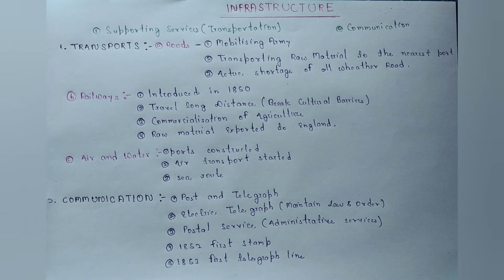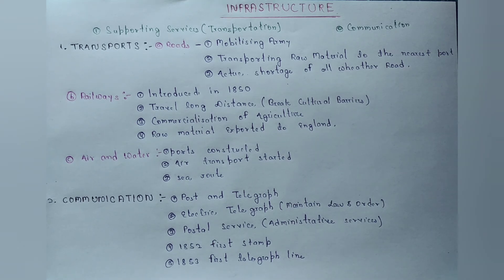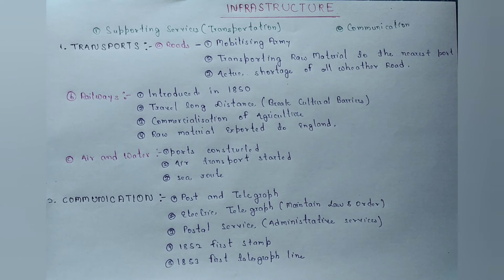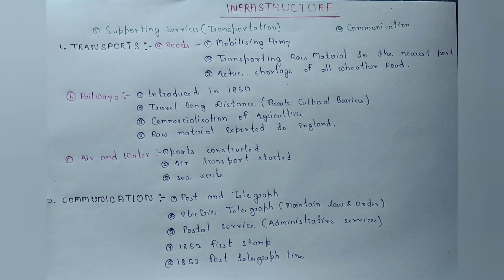The next topic is infrastructure। Infrastructure में हम लोगों को transportation और communication के बारे में पढ़ना है — कि उस वक्त British ने क्या-क्या infrastructure develop किये थे, और उन infrastructure का क्या objective था। Transportation में जो first infrastructure हम लोग पढ़ने वाले हैं वो है roadways।